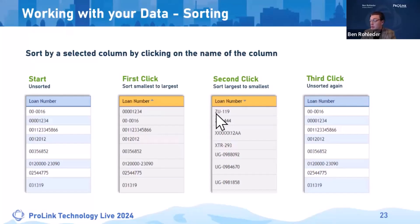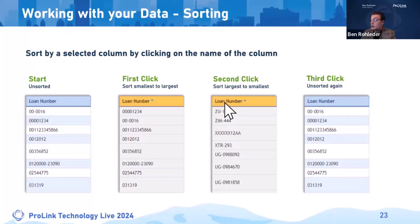To unsort the column, you click on it a third time. So: one click — ascending, second click — descending, third click — unsorted.